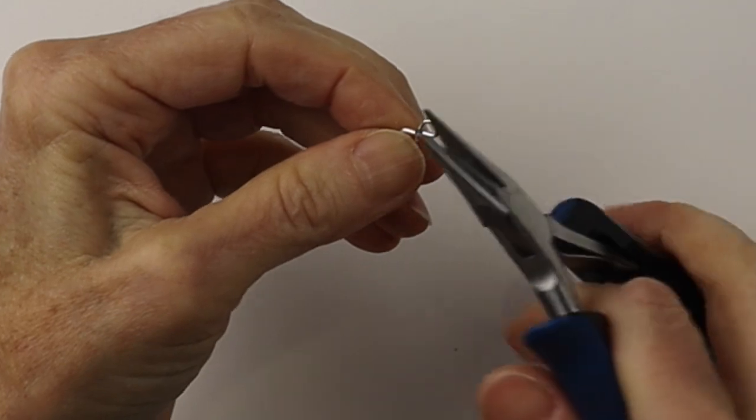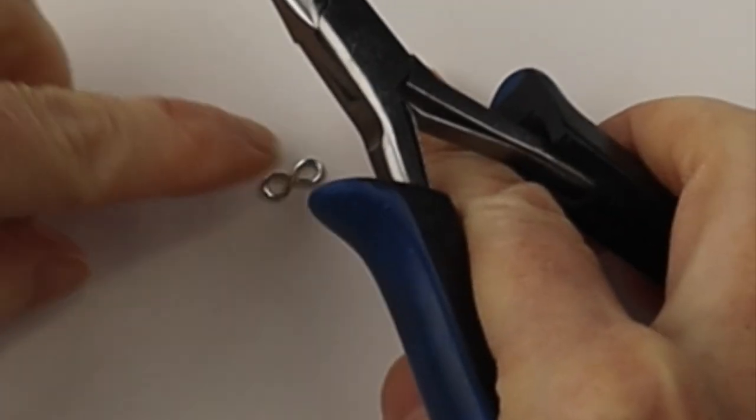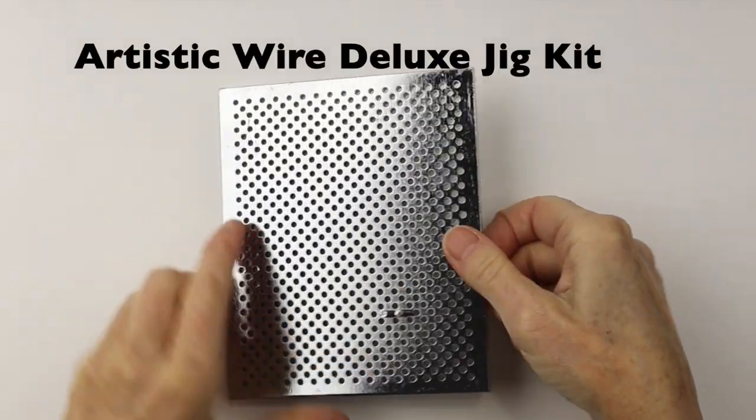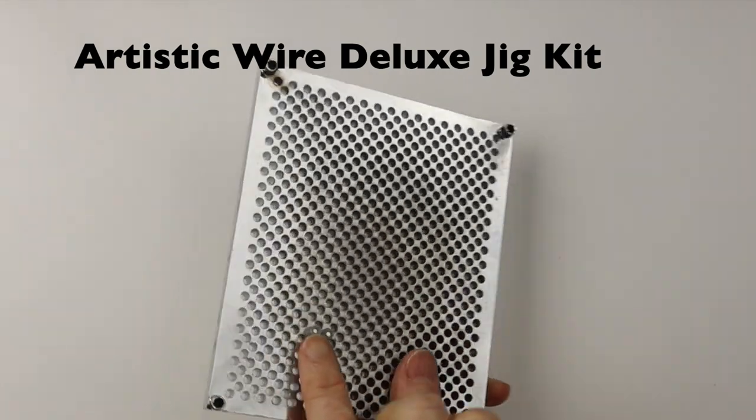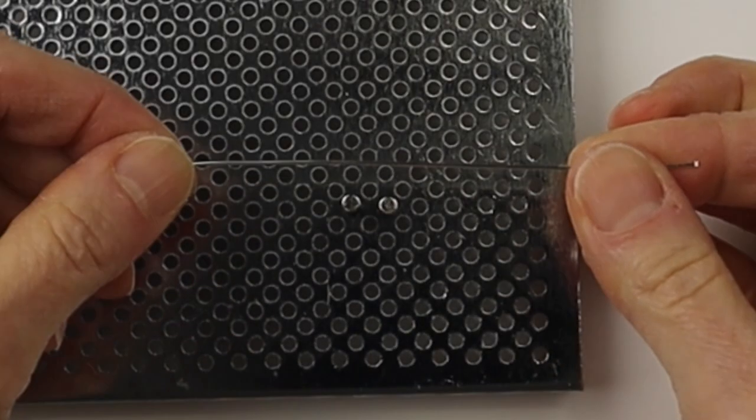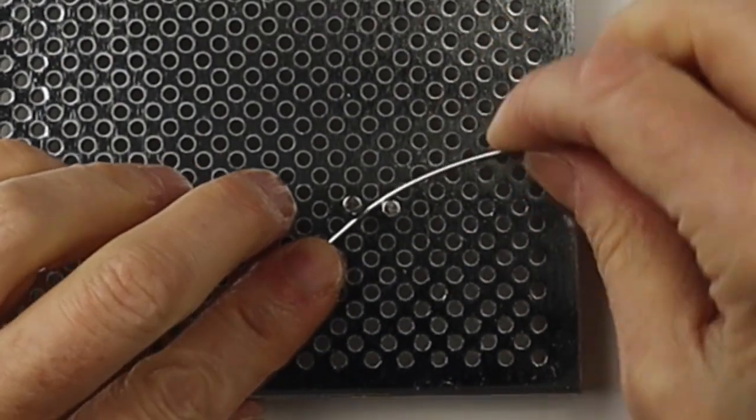Just like I said, use good quality flush cutters to get a nice straight edge and then you can push it down and there's another little infinity sign. You can make a whole chain with them. Now you can also make it with the Artistic Wire Deluxe Jig Kit.